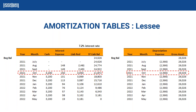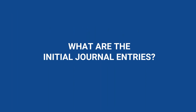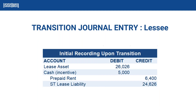Now we're going to talk about our journal entries. Upon transition — July 1st of 2021 — the lessee needs to make an entry for the initial recognition of the asset and the liability. Starting with the lease liability: we took the present value of our payments and came up with a liability of $24,626. Liabilities have normal credit balances, so we recognize this through a credit. It's worth noting this is a short-term liability because it's going to be reduced within 12 months.